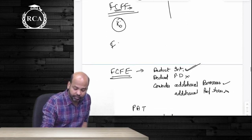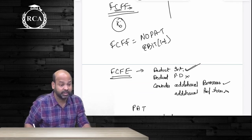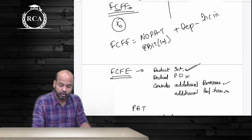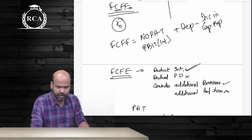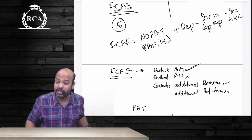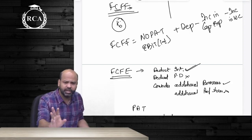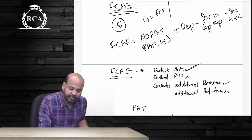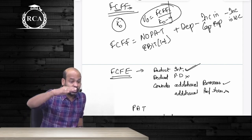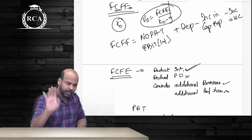Once you have the free cash flows available to the firm, you discount them just like the dividend discount model. If cash flows are growing at a constant rate from year 1, write V0 = FCFF for year 1 divided by (KO − G). If cash flows increase only after, say, 4 years, discount the first 4 years' cash flows separately and then arrive at terminal value at the end of year 4 using the constant growth formula.